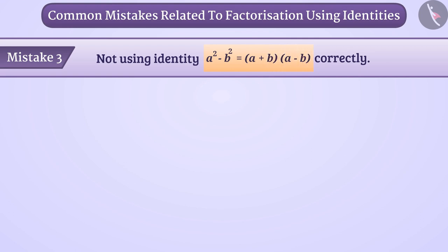They factorize the algebraic expression 9x square minus 36 incorrectly. Keep in mind that the first term here is 9x square which is the square of the term 3x. Similarly, the number 36 is the square of 6.